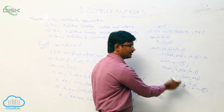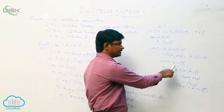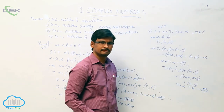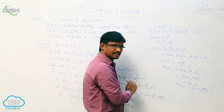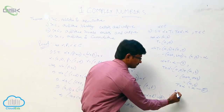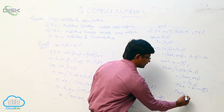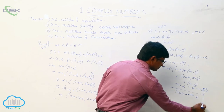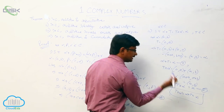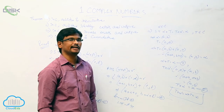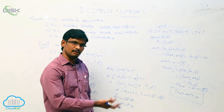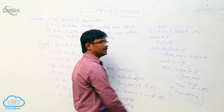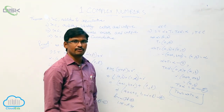Observe equations one and two — the RHS are the same, so LHS will be the same. Therefore t plus alpha equals alpha plus t equals alpha. Here t is called the additive identity of alpha.